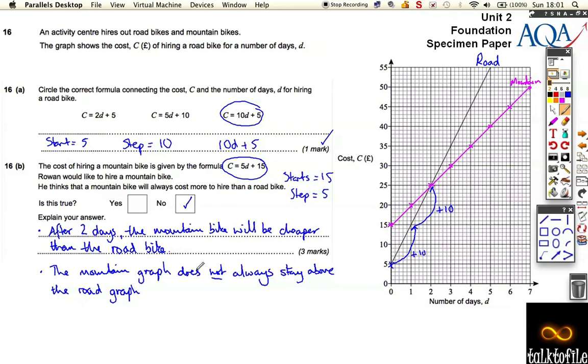If it was always more expensive, this pink line would always be above the black line for the road, but it's not. It crosses - it starts off more expensive, but after two days any days for three or more onwards is actually cheaper. Understanding this idea of step and start is very similar to the sequence idea - it's a really important concept.